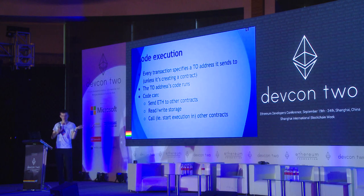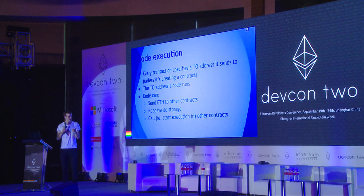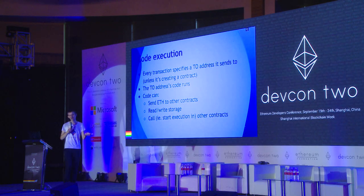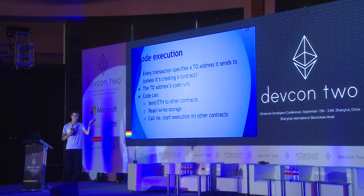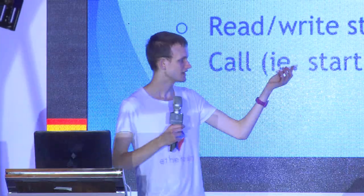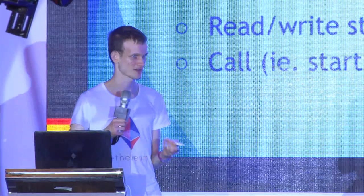Code execution: every transaction specifies a to-address. If the to-address is just a regular account without code, all you're doing is moving ether around. If the to-address actually has code, then the code runs. The code can send ether from that contract to other contracts, read the contract storage, write to the contract storage, and contracts can even talk to other contracts.